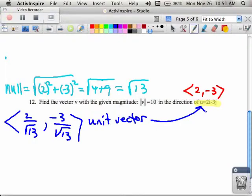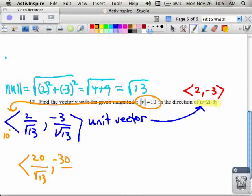The reason that I did that is it makes it very easy for me to find a vector, a new vector, with a special length of 10, because all I have to do now is take that 10 and multiply it by my current unit vector, which has a length of 1, and it'll give me a vector of length 10. So I just multiply this by 10, and I get 20 over radical 13, comma, negative 30 over radical 13.